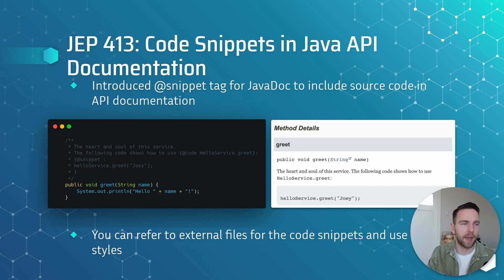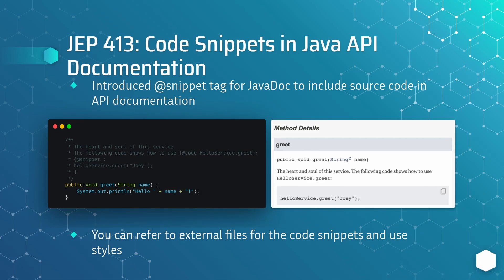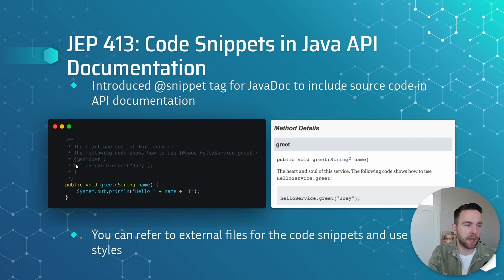In JEP 413 they added code snippets in the Javadocs. They introduced a special @snippet tag for Javadocs to include source code in your API documentation. I added some Javadocs to this method, and then with the @snippet tag I specify a code example, and then in the generated Javadocs you can see that the code snippet is shown with a copy button. Good to know: the snippet tag is indentation sensitive, so you can add indentation with a longer snippet with an if-else statement, and it will show up in the code block. You can also refer to external files for the code snippets and use styles.